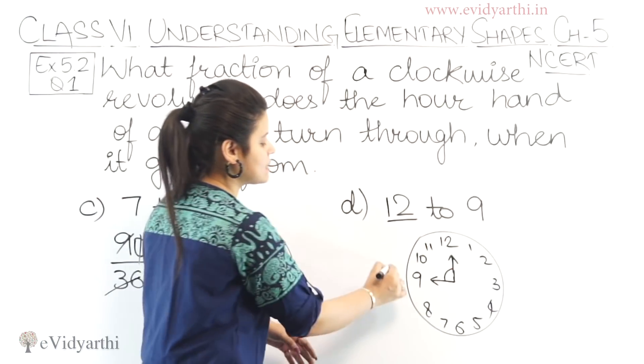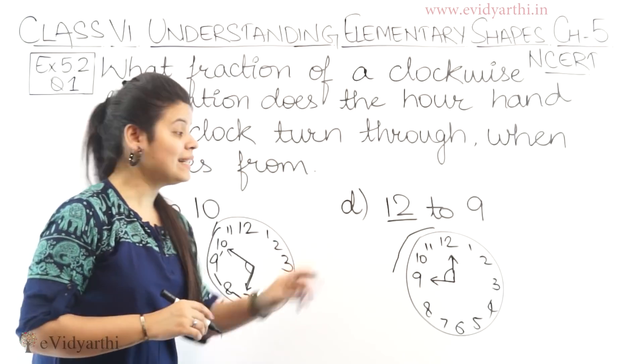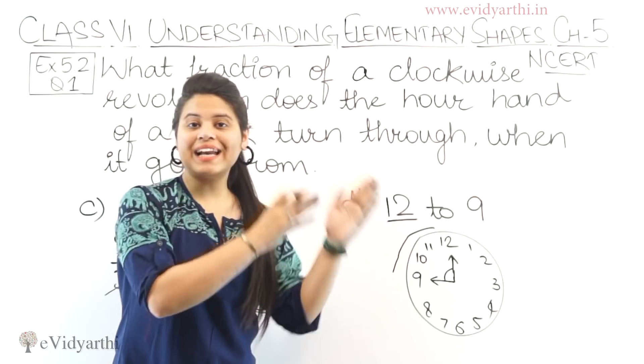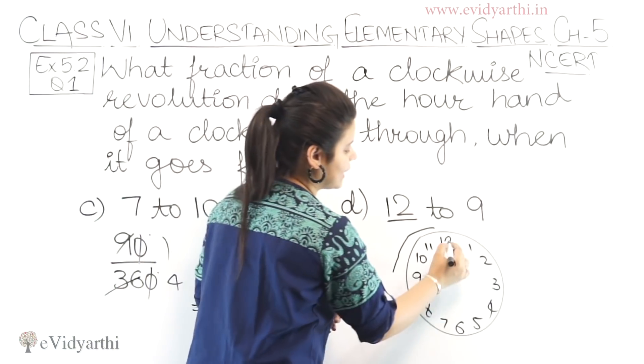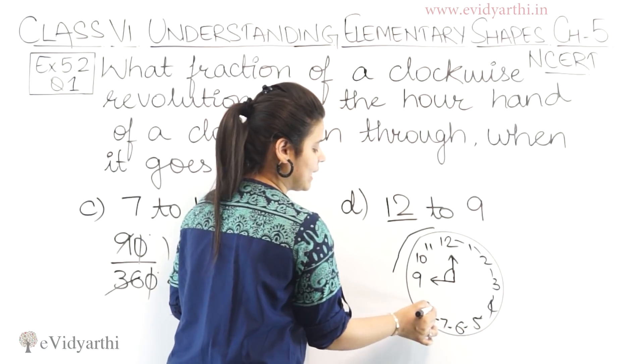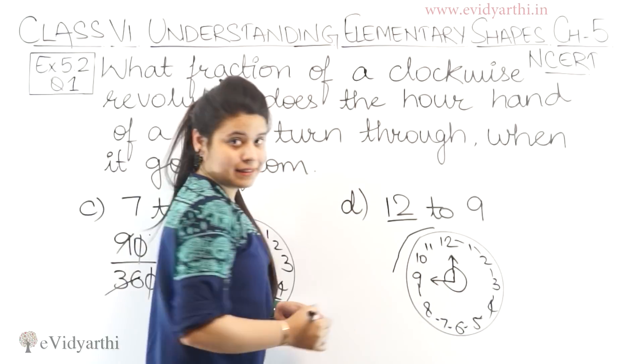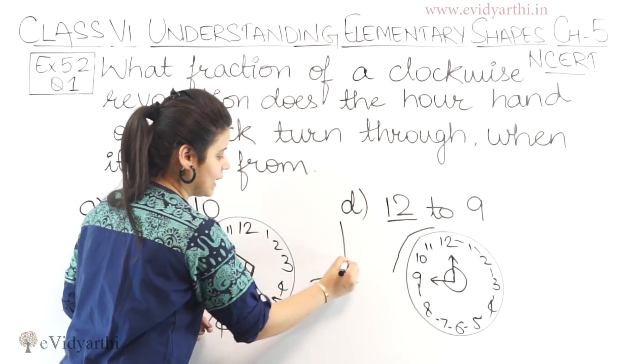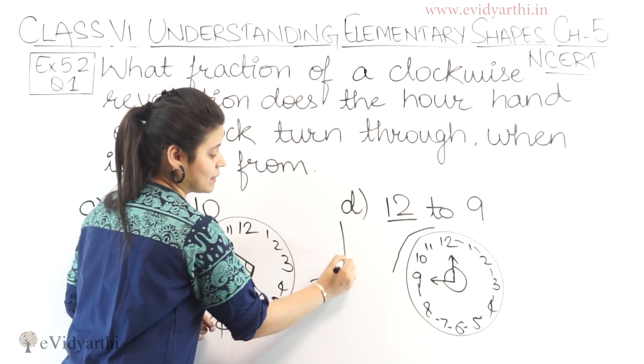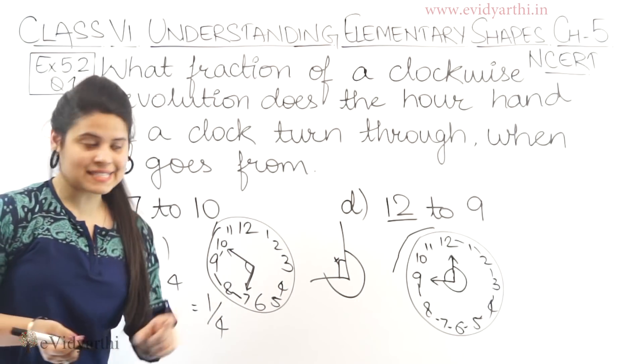But, the question is twelve to nine. So, it's going the other way. Twelve to one, two, three, four, five, six, seven, eight. Then it will reach nine. Means, it's talking about this angle. We're not talking about this angle, we're talking about this whole angle. Means, a reflex angle.